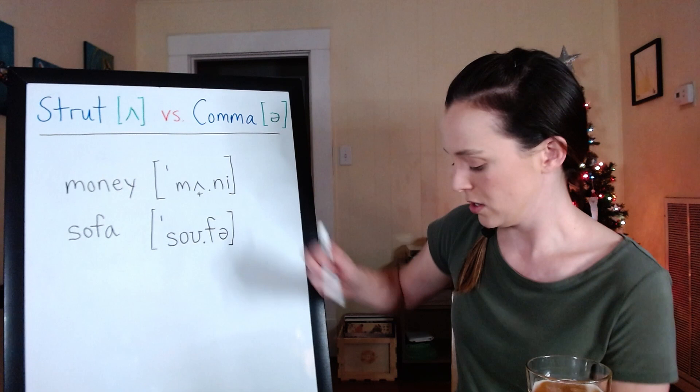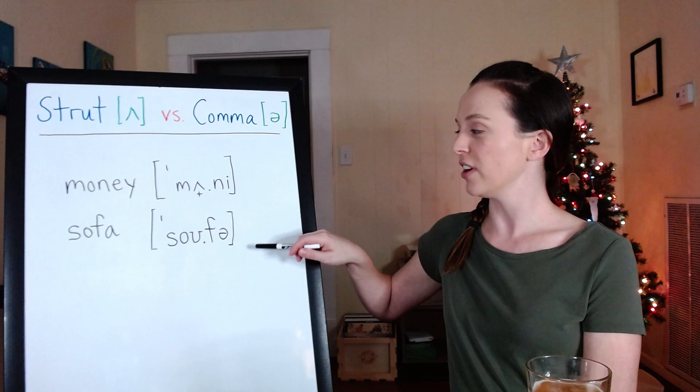Sofa. So we have money and sofa, strut and comma. How'd you do? I bet you did very well.